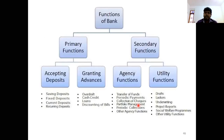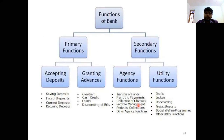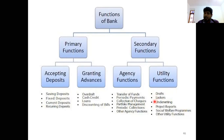The functions of the bank can be divided into two: primary functions and secondary functions. Under primary functions, accepting deposits includes saving deposits, fixed deposits, current deposits, and recurring deposits. Granting advances includes overdraft, cash credit, loans, and discounting of bills. Under secondary functions there are agency functions — transfer of funds, periodic payments, collection of checks, portfolio management — and utility functions such as issue of drafts, locker facilities, underwriting of shares and bonds, dealing in foreign exchange, and social welfare programs.